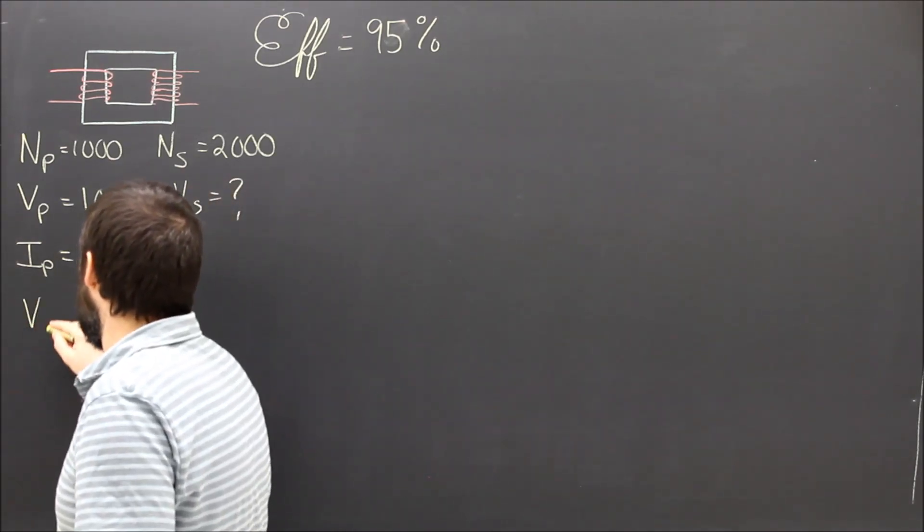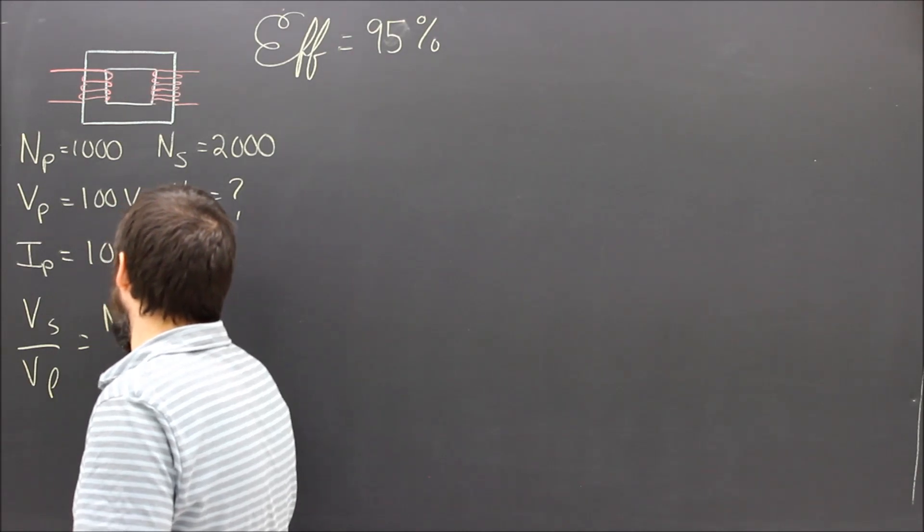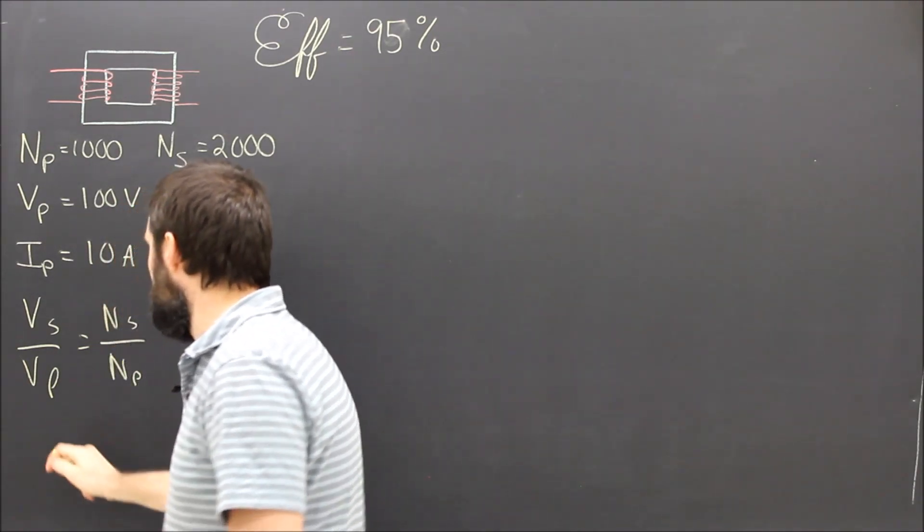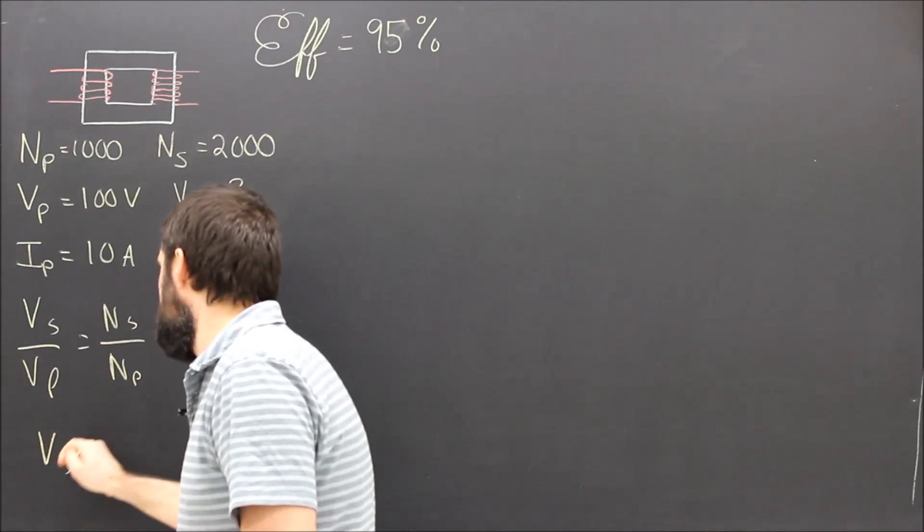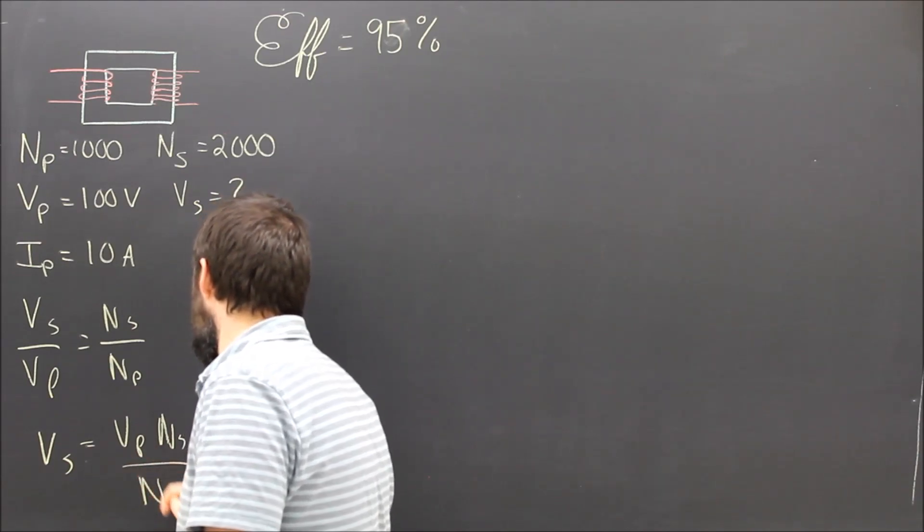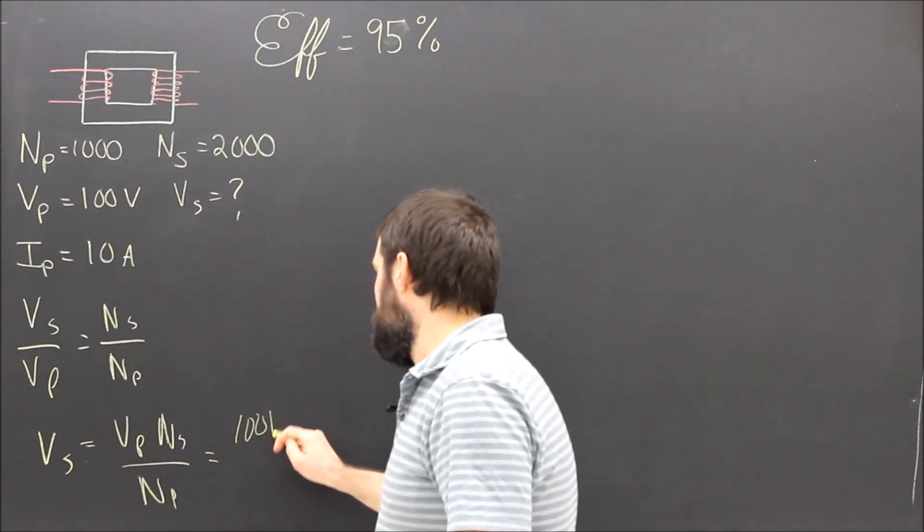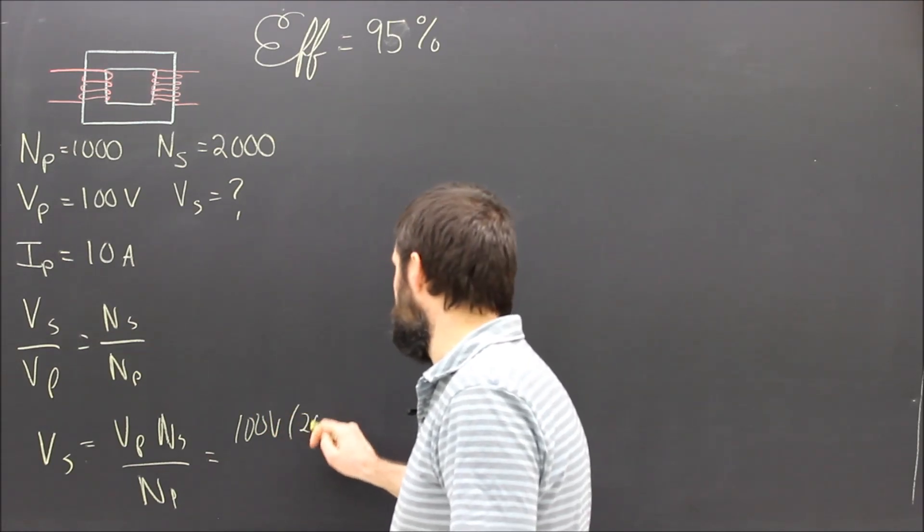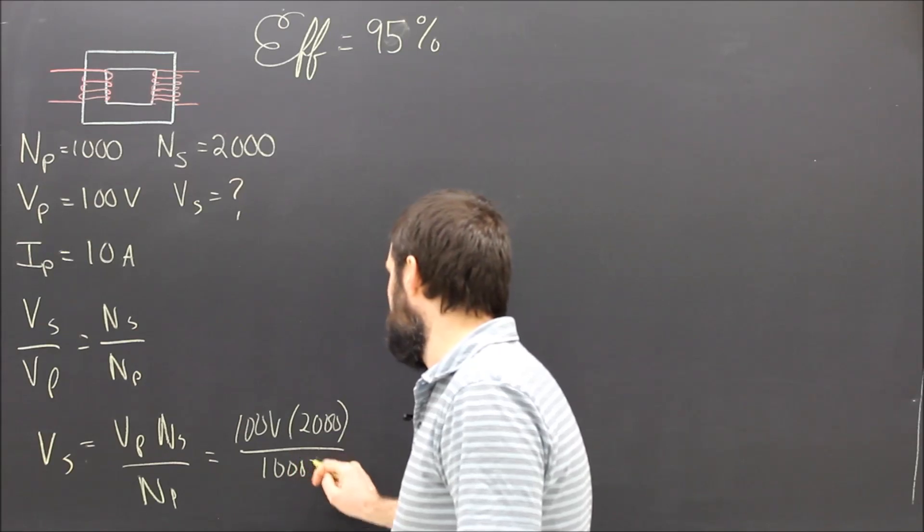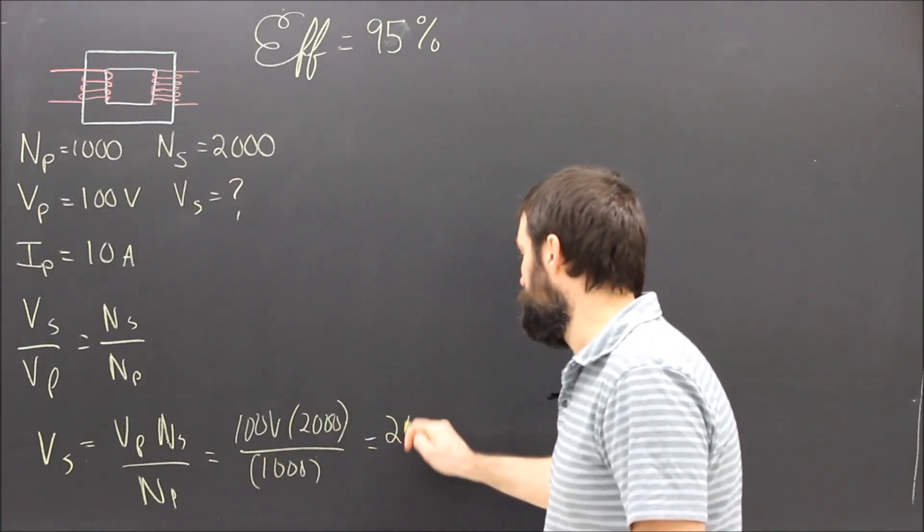We know that the secondary voltage over the primary voltage equals the secondary number of turns over the primary number of turns. Rearranging this, we can see that VS equals VP times NS over NP. Subbing in, we can see that it's 100 volts times 2,000 divided by 1,000 turns. And when all that cancels out, we'll end up with 200 volts.